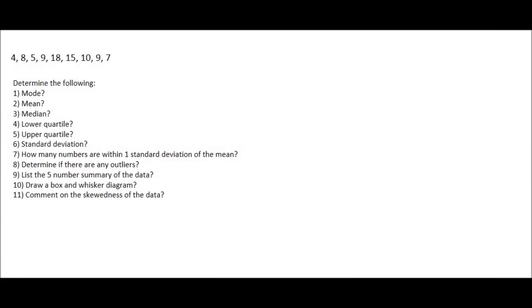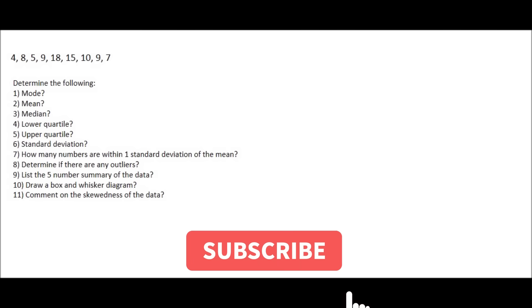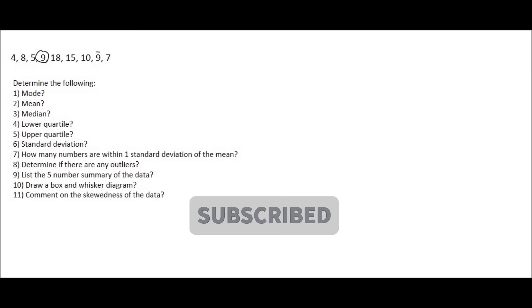Here we have a list of numbers and the first question asks us to determine the mode. Now these are just words that you're going to have to remember. Mode means the number that occurs the most, and in this example that would be the number nine.